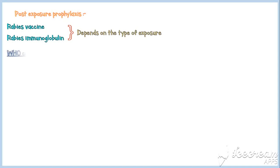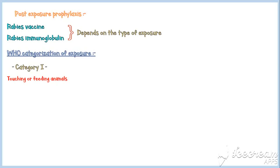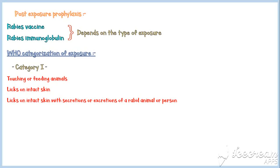WHO has categorized all exposures into three types. Category 1 includes touching or feeding animals, licks on intact skin, or licks on intact skin with secretions or excretions of a rabid animal or person. These situations are not regarded as exposures, so post-exposure prophylaxis is not required for Category 1 exposures.